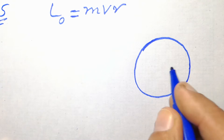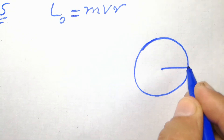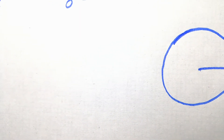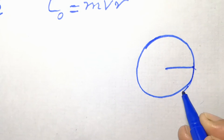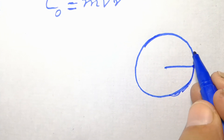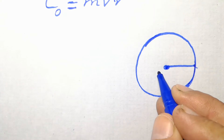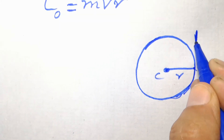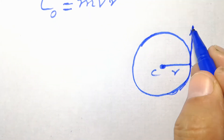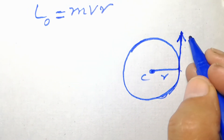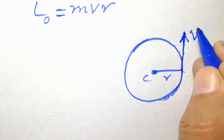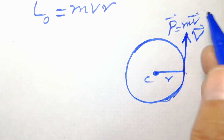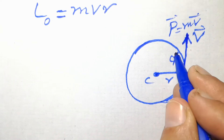Look at the diagram here. We have a body moving in a circle. This is the center of the circle and this is the radius. The linear velocity can be found by drawing a tangent line. It is the linear velocity and also the linear momentum MV.